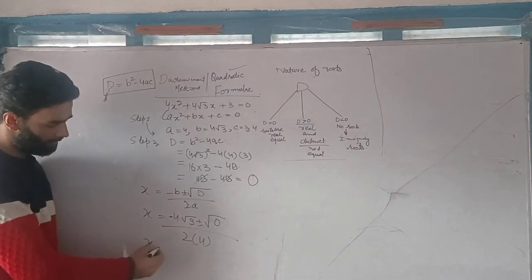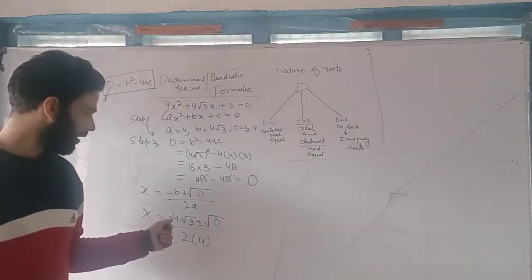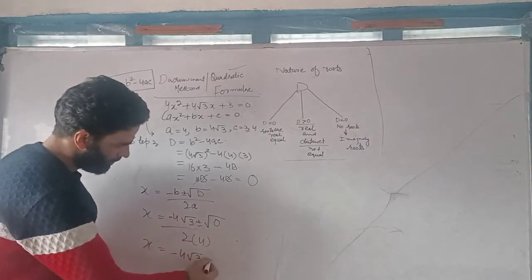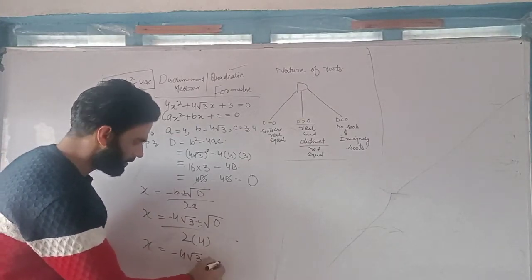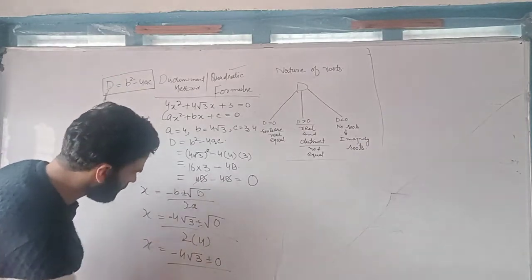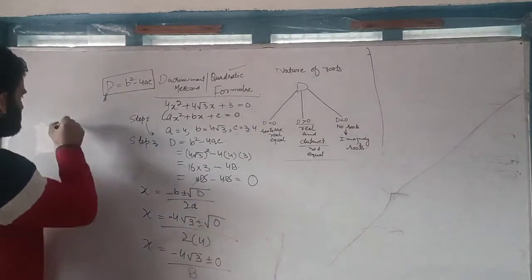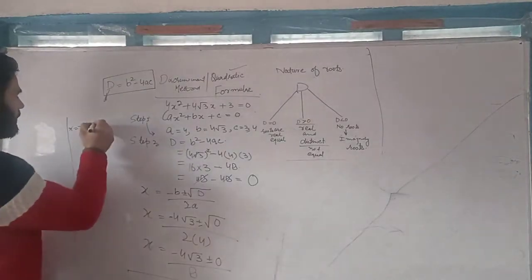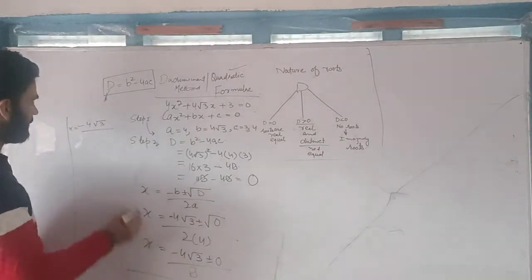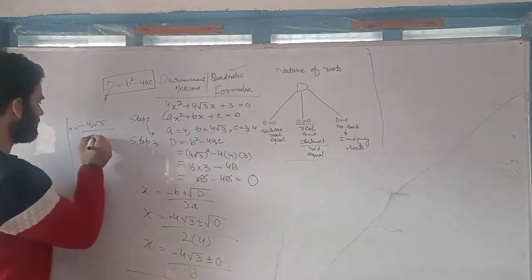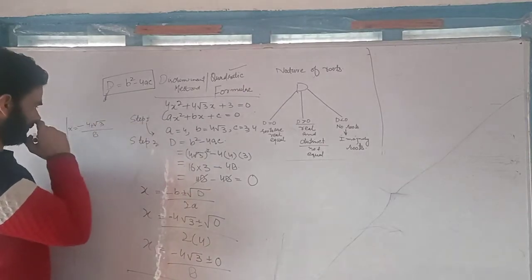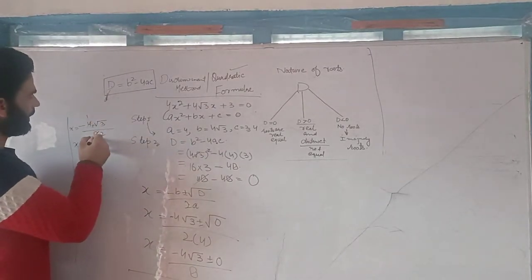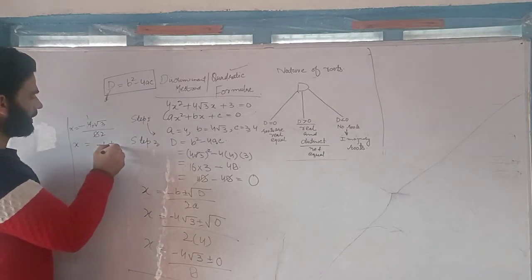Now I will solve it further. x is equal to minus 4 under root 3, it will remain as it is, plus or minus under root of 0. Under root 0 is 0. Divided by 2 into 4, which is 8. So x is equal to minus 4 under root 3 divided by 8, plus or minus 0 divided by 8. That simplifies to x is equal to minus under root 3 divided by 2.